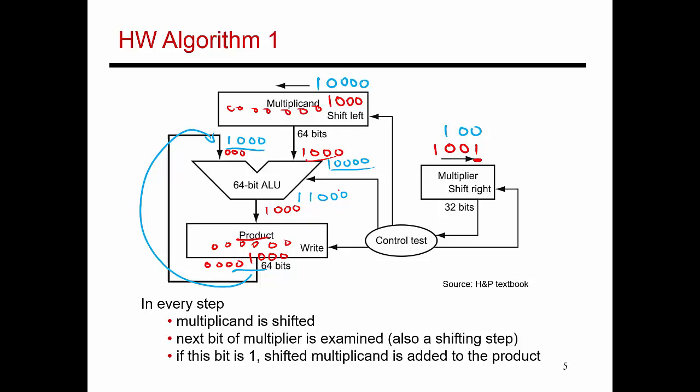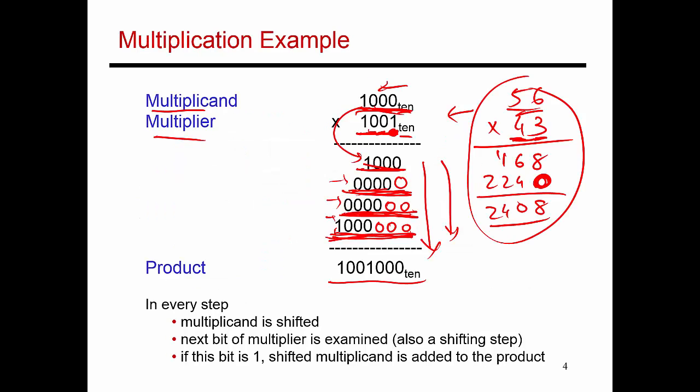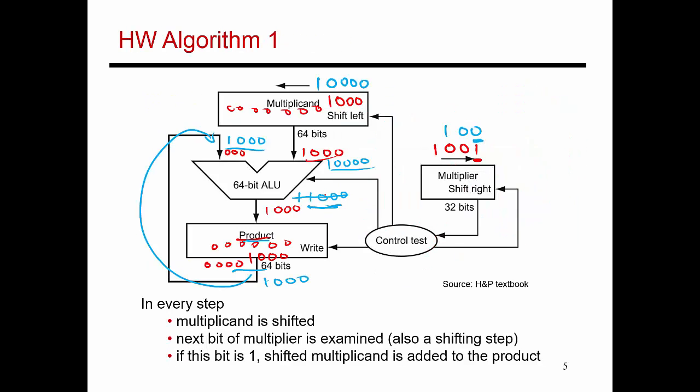And now the question is, do I increment this product register with this new sum over here? That is determined by looking at this least significant bit. It's a zero, which means that this sum that I've just computed can essentially be ignored. And so the product register stays at its value of 1 followed by three zeros. So what happened there is I basically realized I should be adding zero to whatever is in the product register. So I did this math, but then I said, well, you know, I really need to add a zero. So I'm just ignoring that sum. And so the product register remains at that value over there.